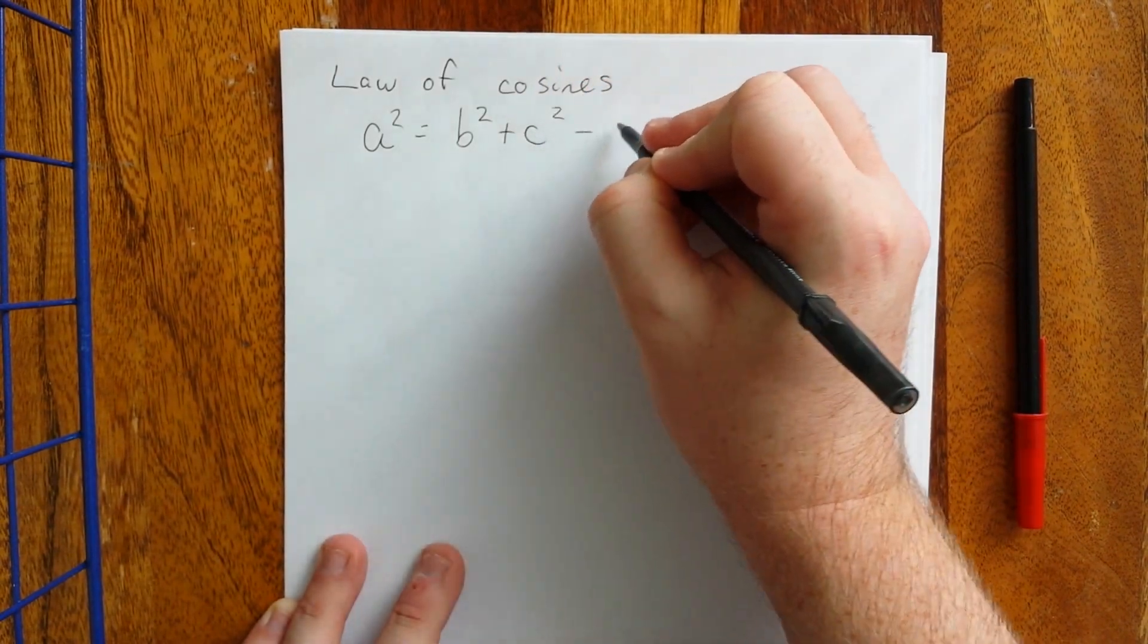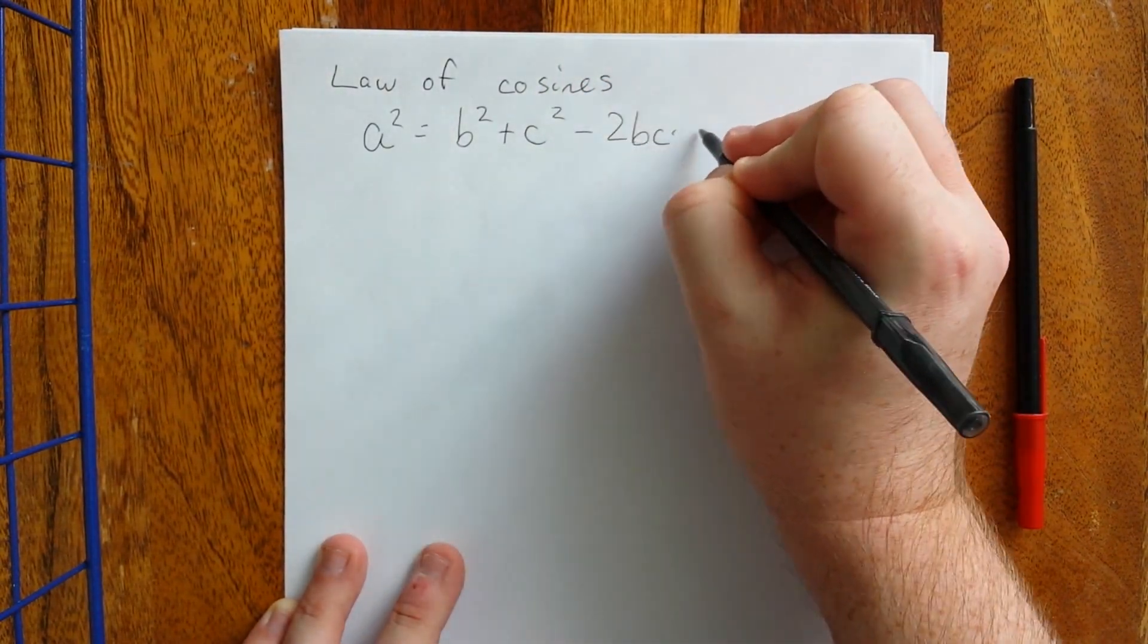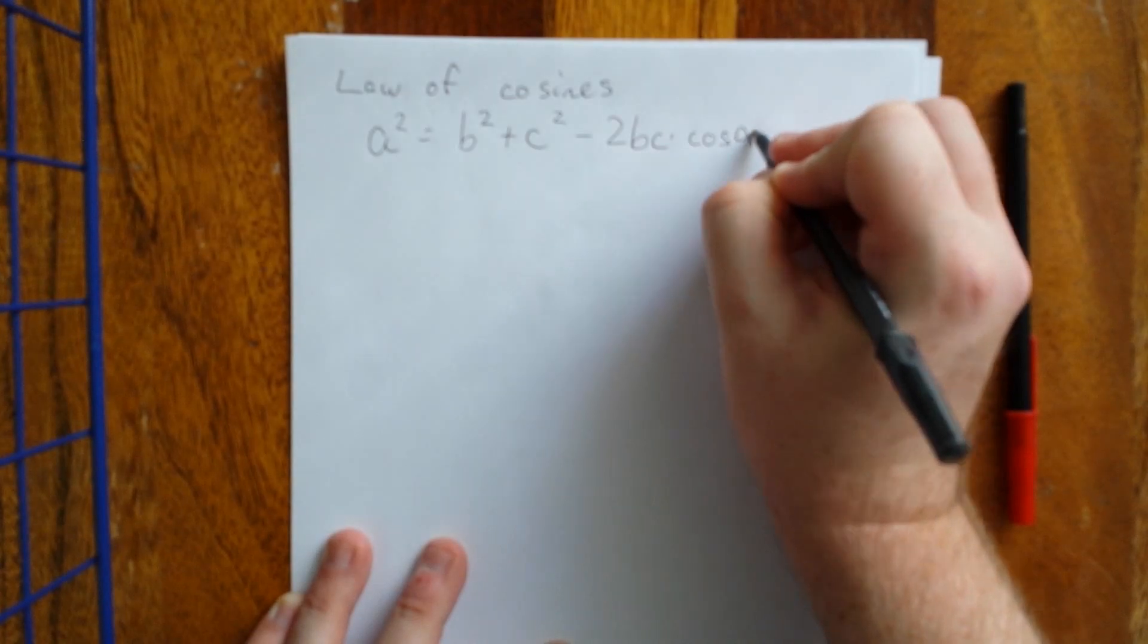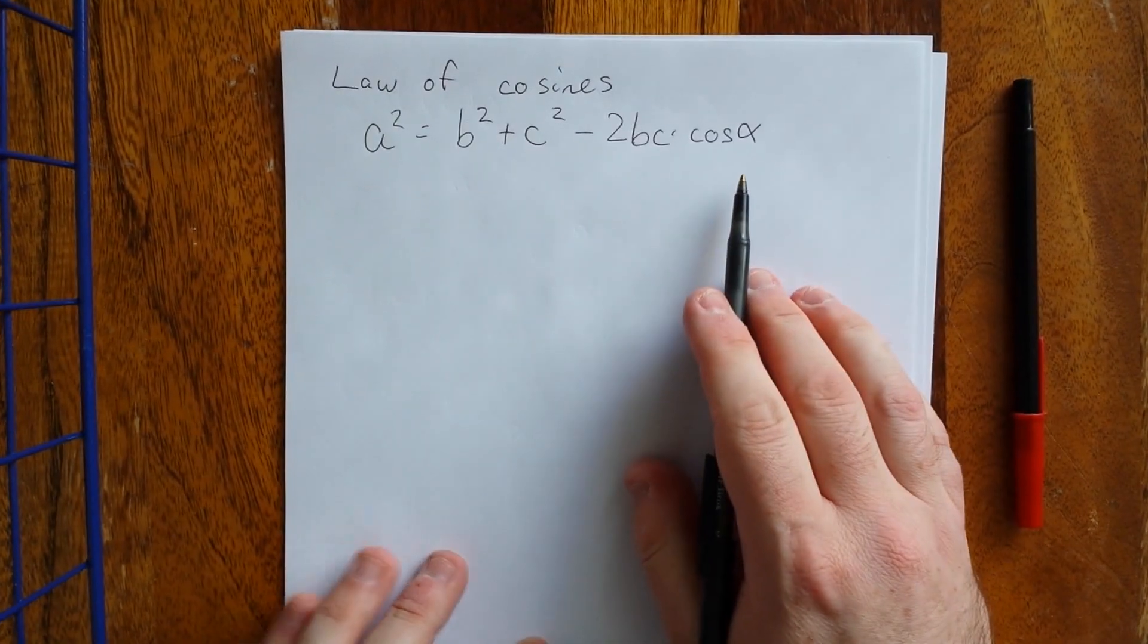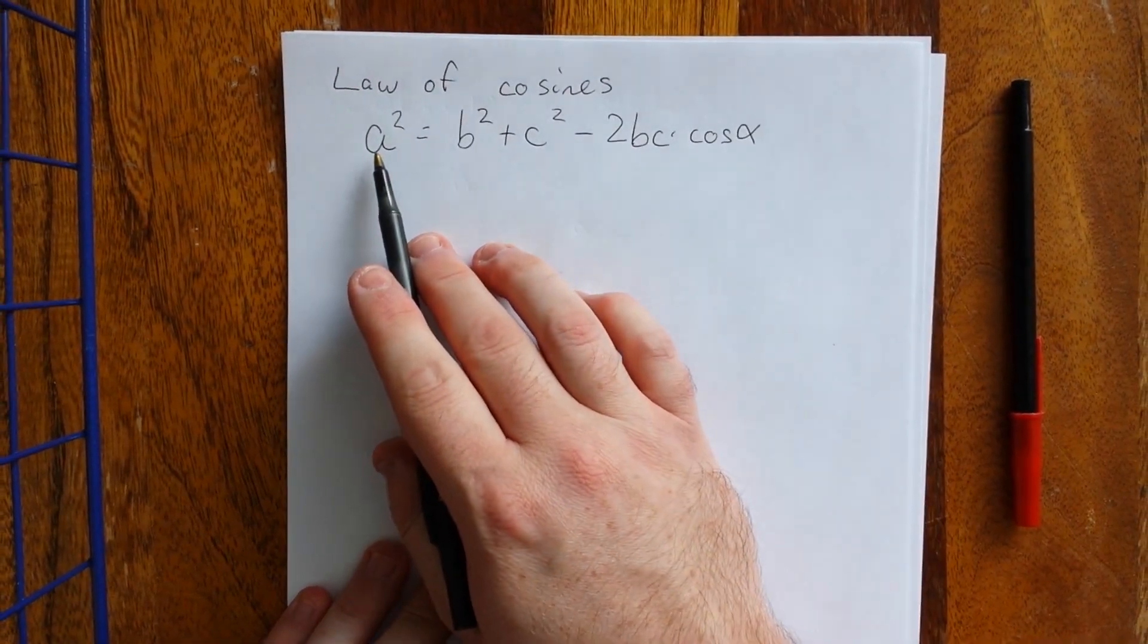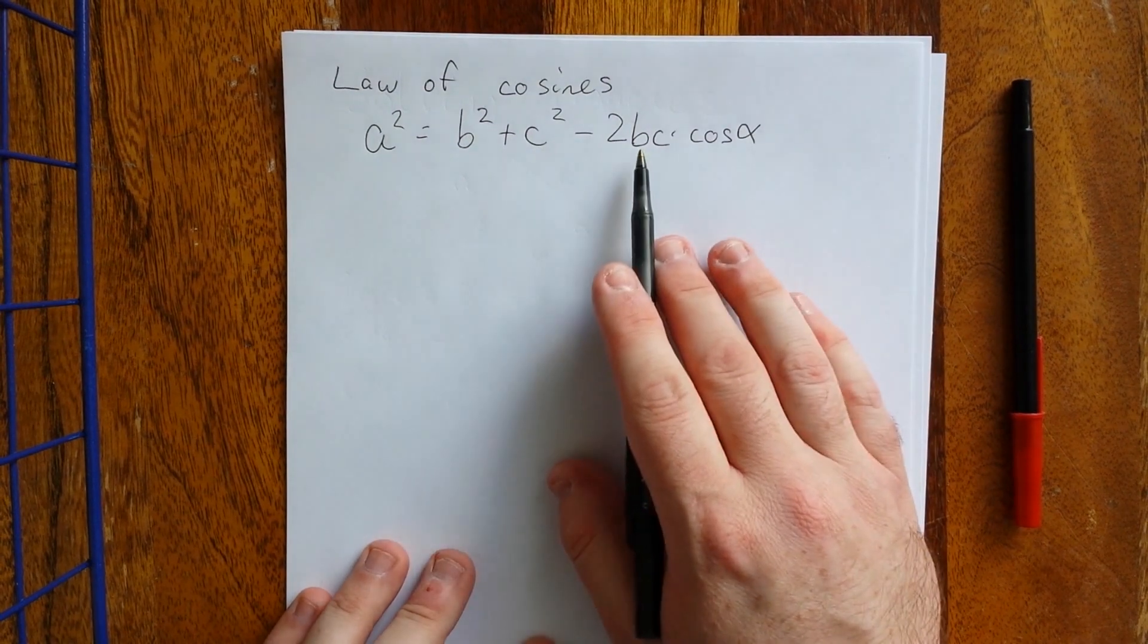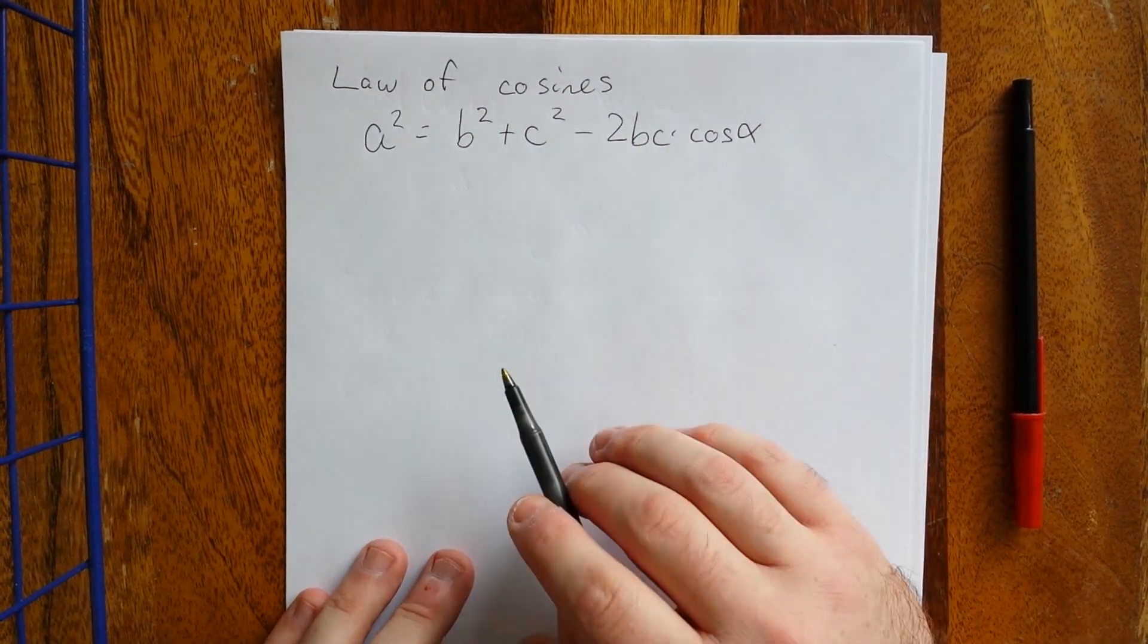This one is a little more complicated to show. It's based on the distance formula. The first statement of the law of cosines is that A squared is equal to B squared plus C squared minus 2 times B times C times the cosine of alpha.